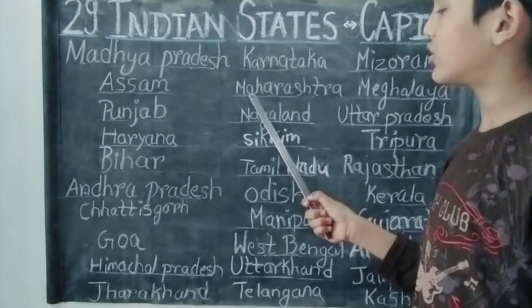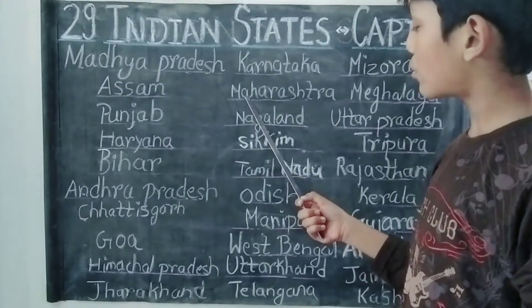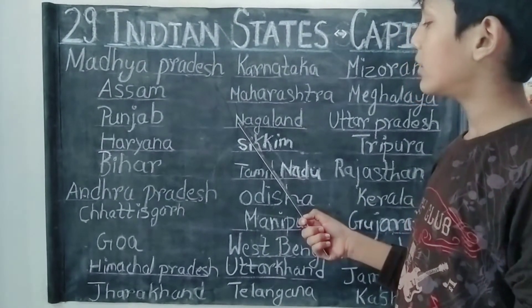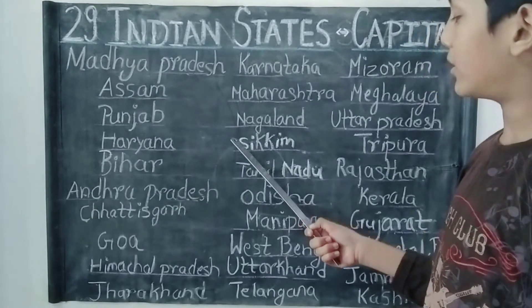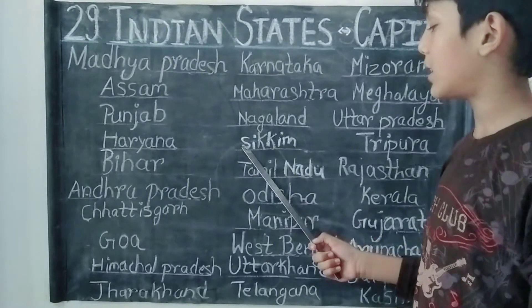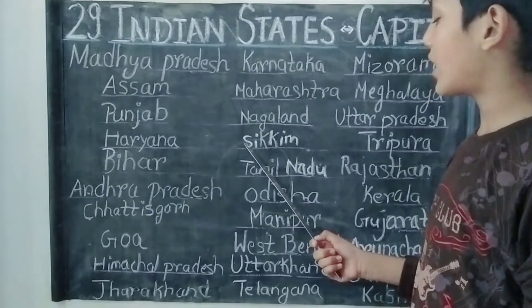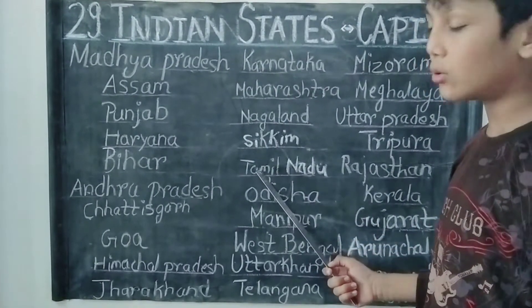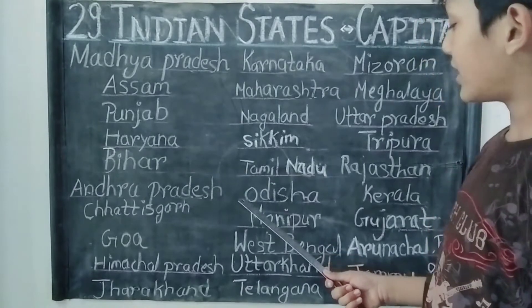The capital of Maharashtra is Mumbai. The capital of Nagaland is Kohima. The capital of Sikkim is Gaintop. The capital of Tamil Nadu is Chandigarh.